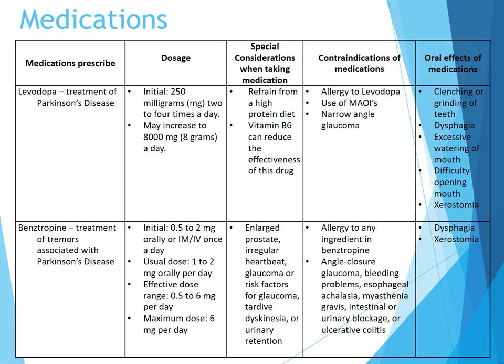The medications prescribed are Levodopa and Benztropine. Levodopa is for the treatment of Parkinson's disease. The initial dose is 250 milligrams two to four times a day; we may increase this to 800 milligrams a day. Special considerations: we want to refrain from a high protein diet, and vitamin B6 can actually reduce the effectiveness of this drug.